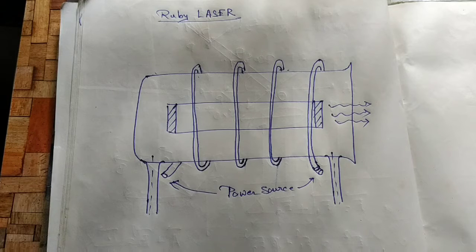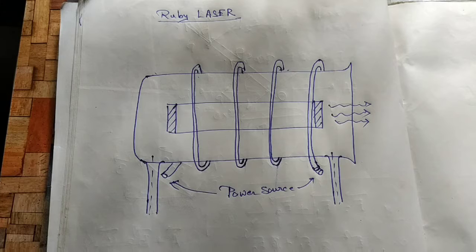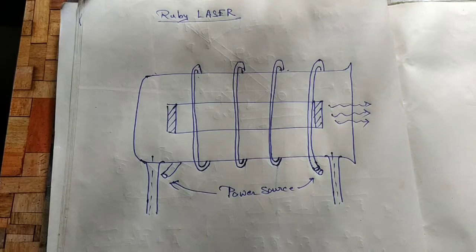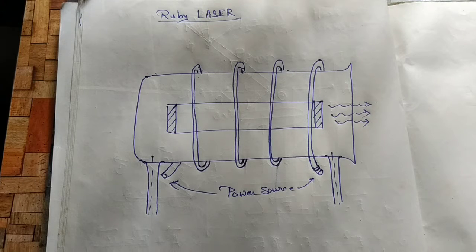In our last lecture, we were trying to understand how the helium-neon laser works. In this lecture, we try to understand how the ruby laser works. What is the ruby laser?